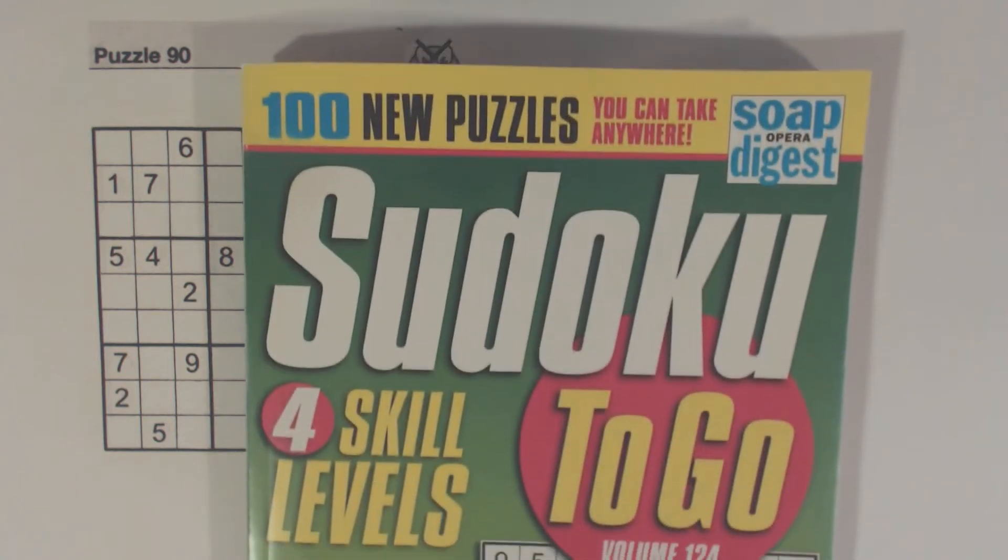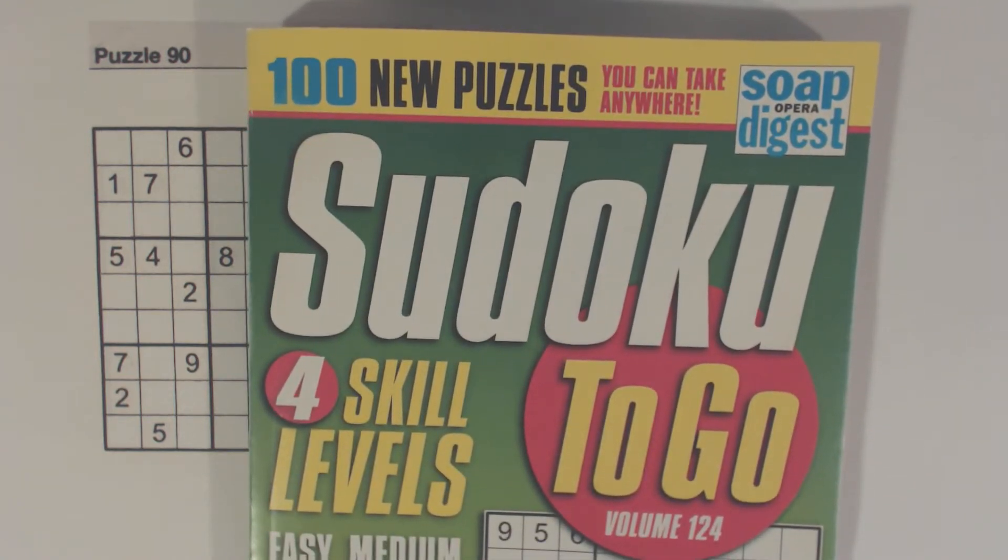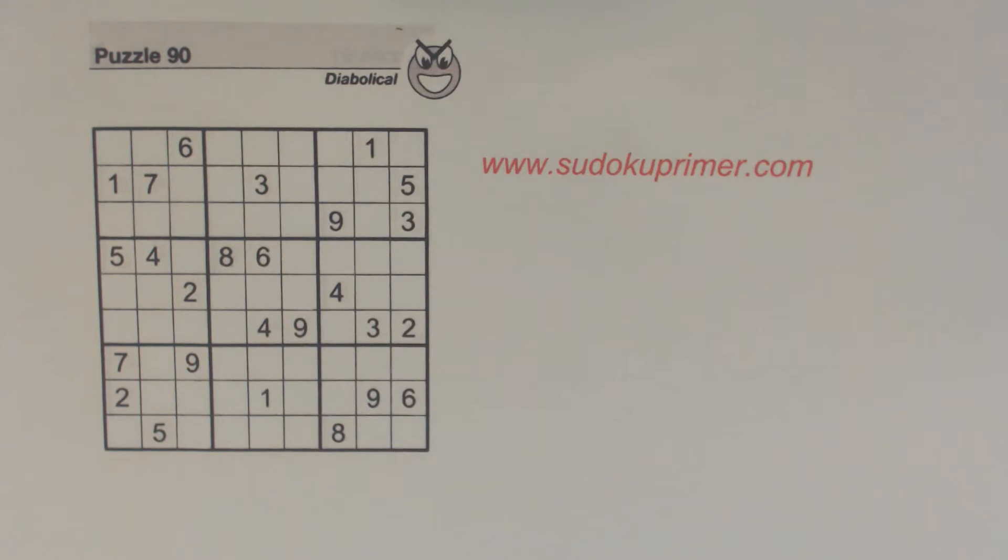This is puzzle number 90 from Sudoku To Go, Volume 124 by Soap Opera Digest.